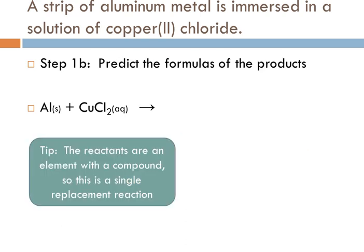The next thing we need to do is predict the formulas of the products. It's single replacement, so we have an element with a compound. We're going to have a new element with a different compound. The other thing I want to point out with single replacement reactions in the AP exam: if you're given a single replacement reaction like this, you can assume that the reaction will occur. You're not going to have to memorize the activity series.